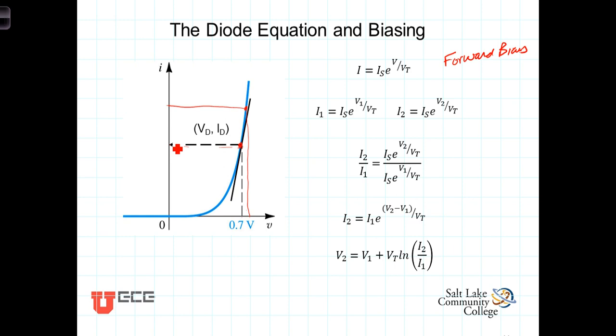We can refer to them or we can write this equation in terms of I1, the current here, say at this point, that's related to V1, this voltage, is given by that relationship. Similarly, this other point here would be I2 is equal to I sub S E to the V2 over V T.